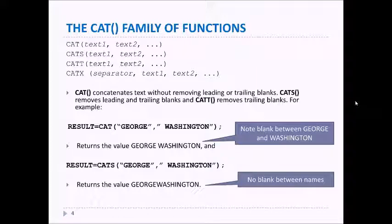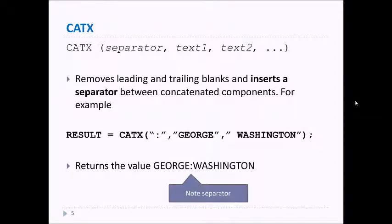Now if we do the same thing with a CATS function, RESULT equals CATS of "GEORGE" comma " WASHINGTON", notice that it removes that blank and so you get no blank between the two names. The CATX function is a little different. It removes the leading and trailing blanks but inserts a separator between the concatenated components. For example, in this CATX use where we have "GEORGE" and "WASHINGTON", notice the separator being the colon there, and so it returns the value GEORGE:WASHINGTON.